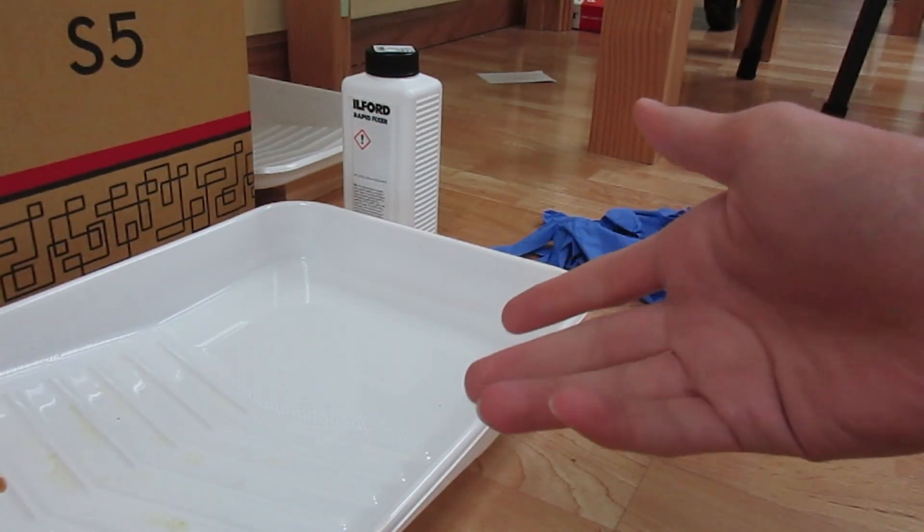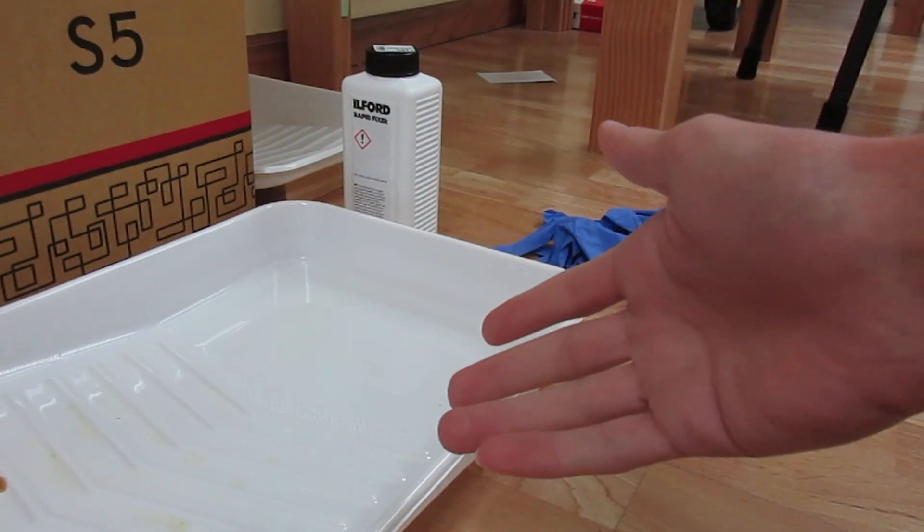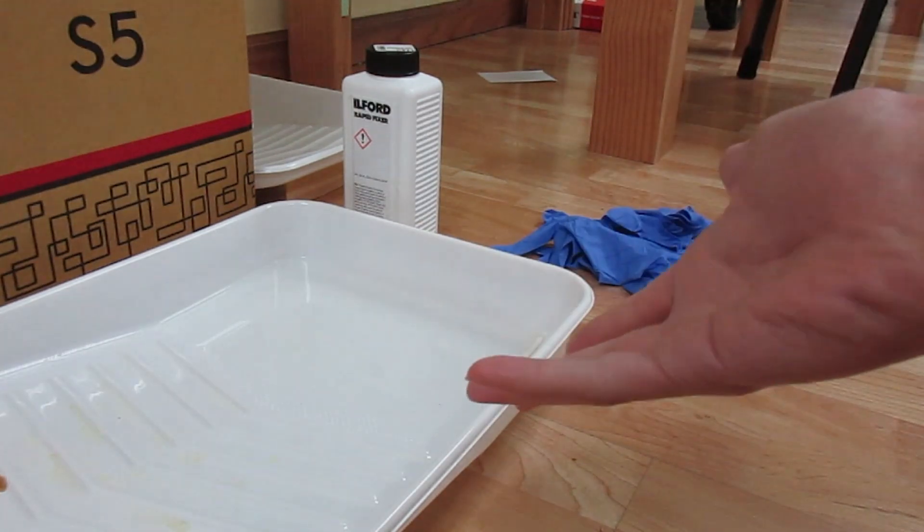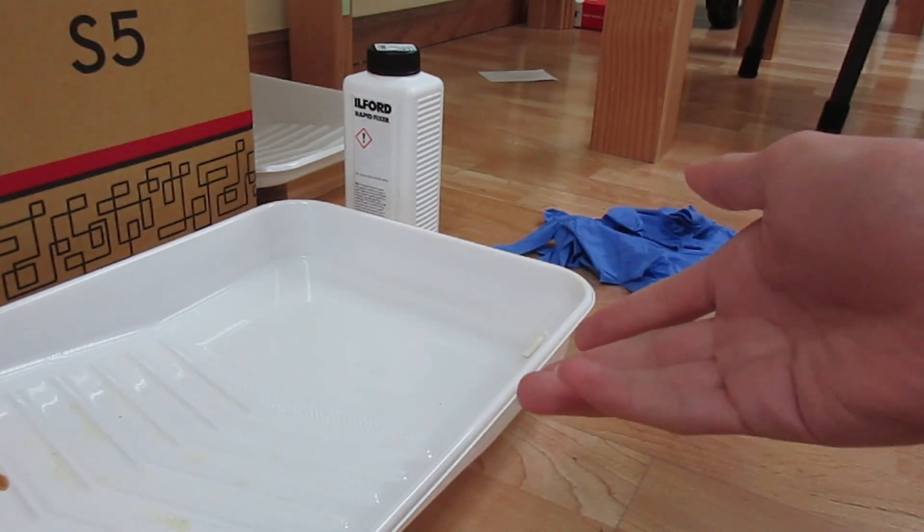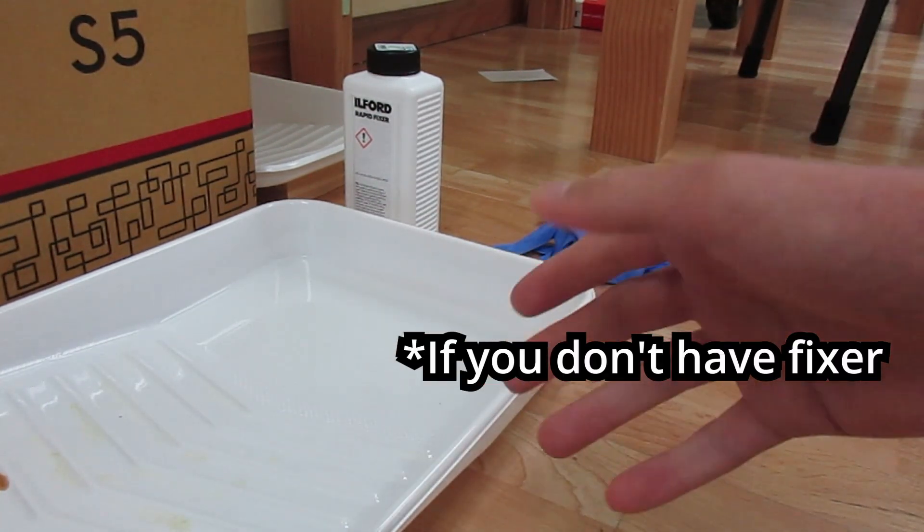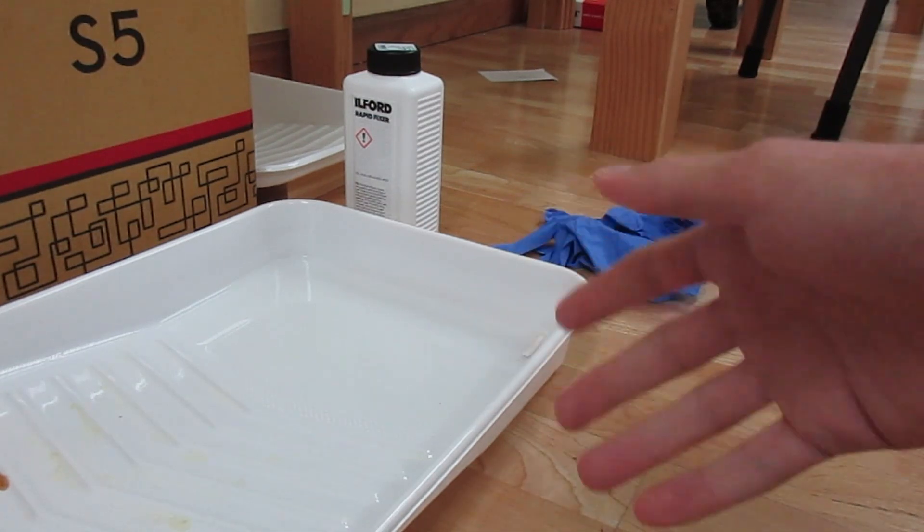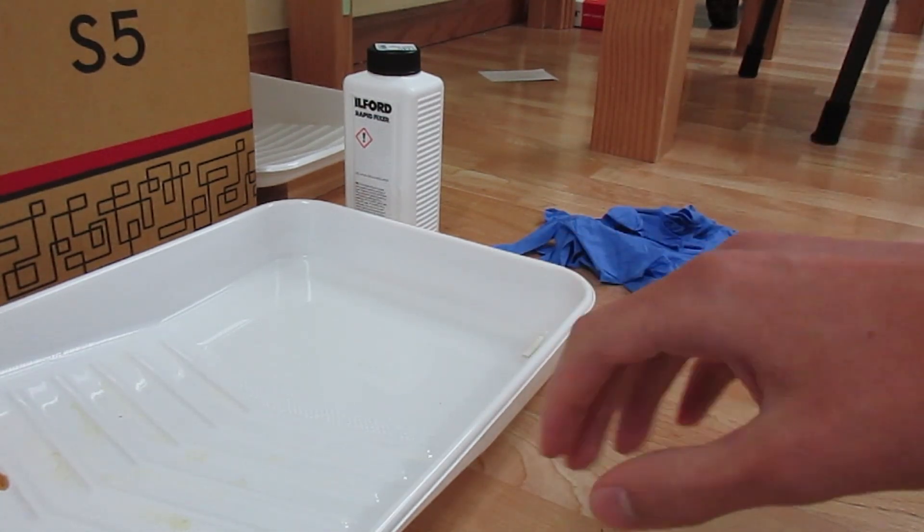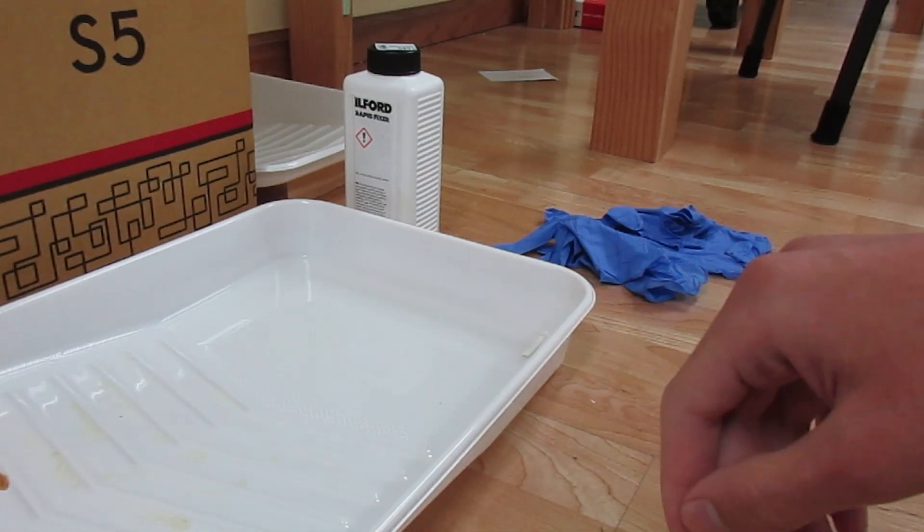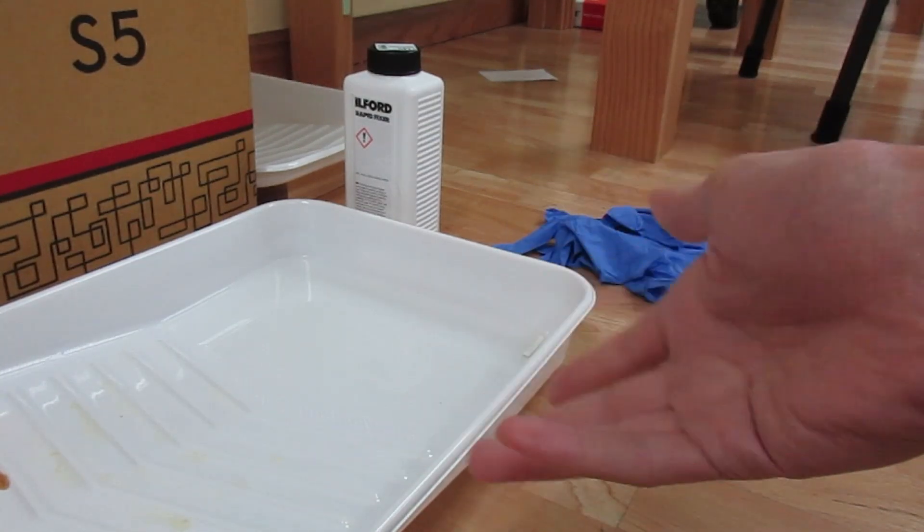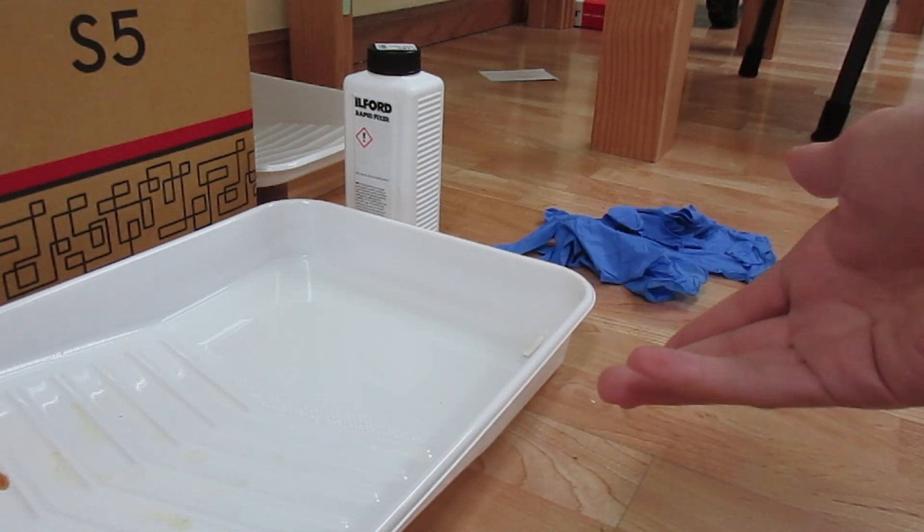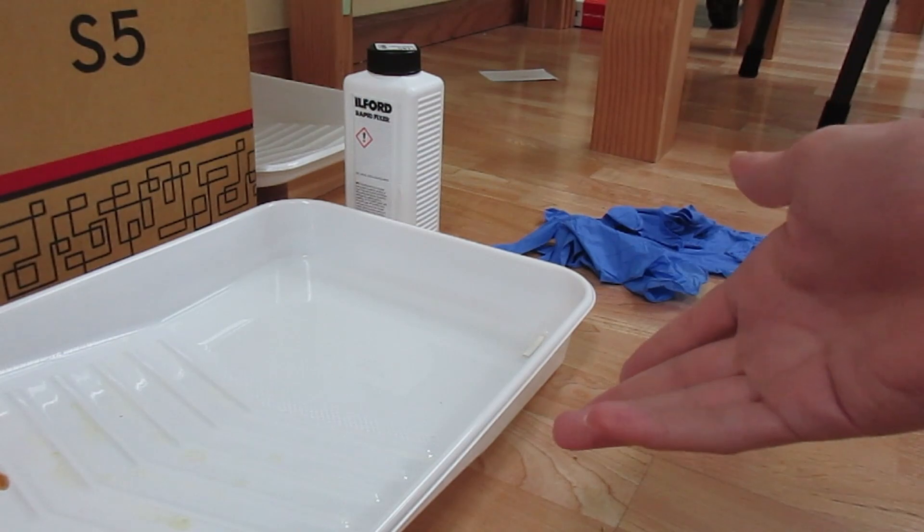All the fixer really changes about the film is it makes the clear parts clear. After developing, just rinse the film off and probably leave it in a water bath to make sure no developer stays on it, because as long as it doesn't keep getting developed, the photo won't be ruined by being in the light after you've developed it.